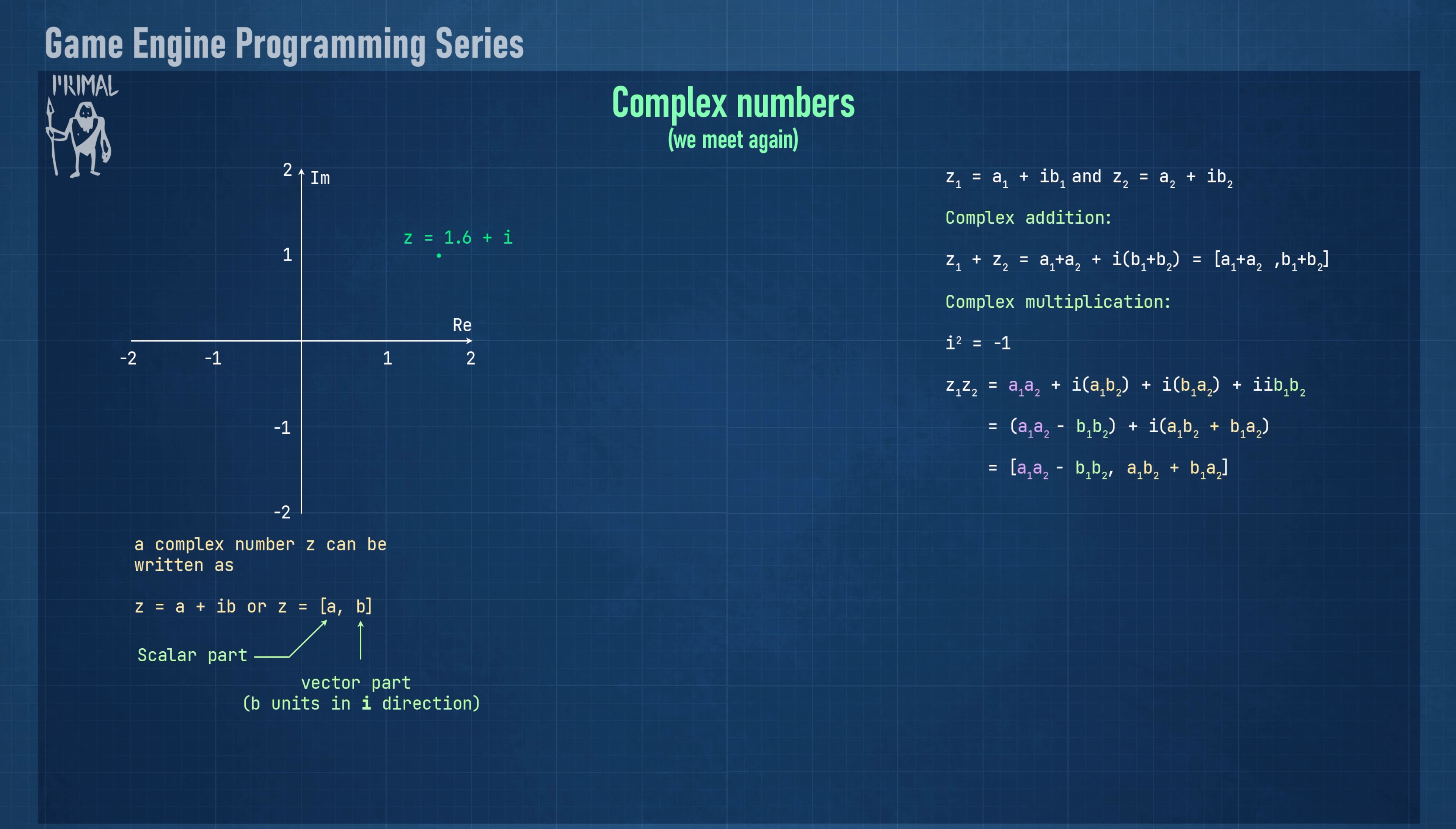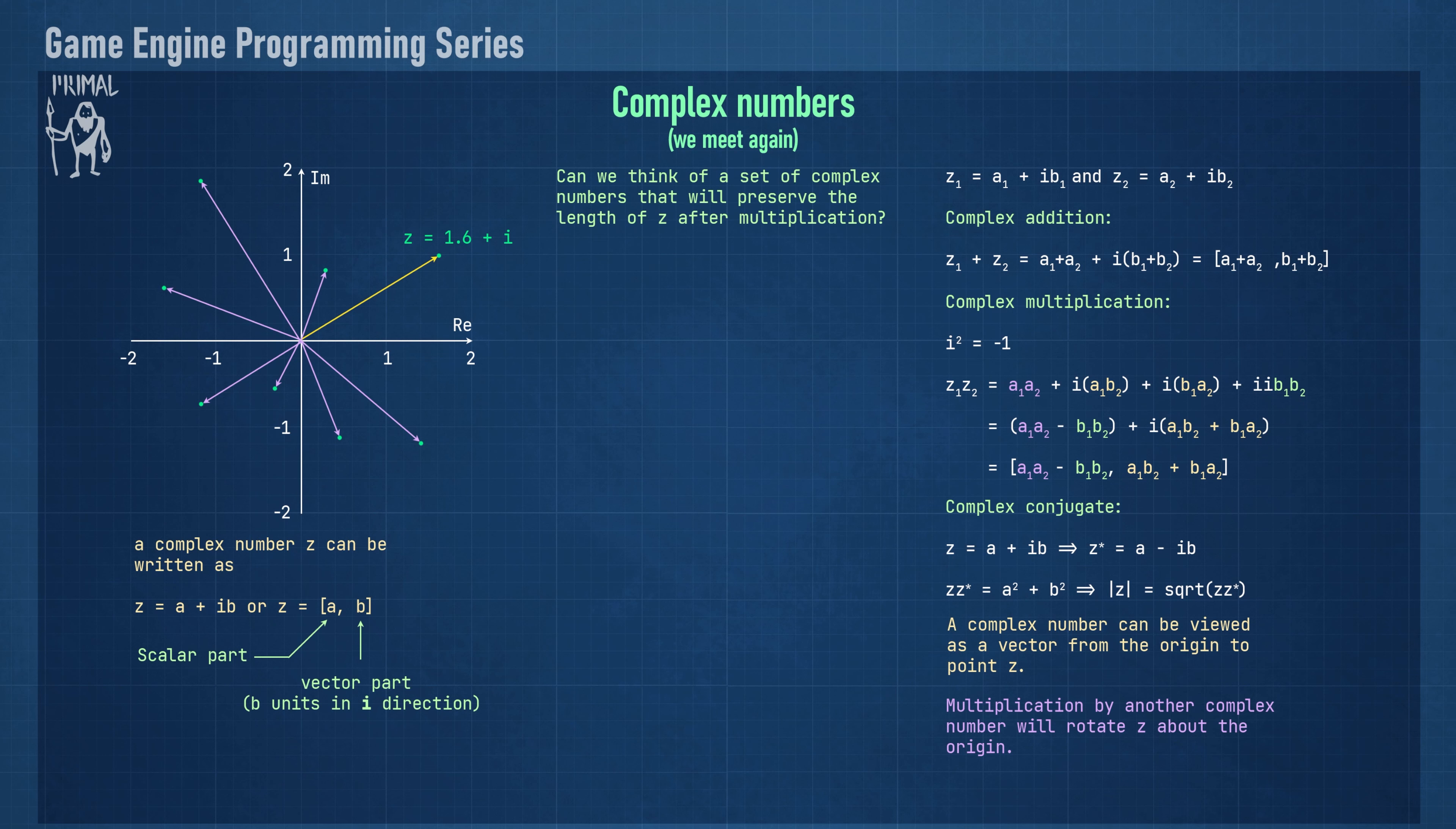We can add two complex numbers in the same way we add vectors. Multiplication is also the same, except i squared evaluates to minus one. Another property of complex numbers is the complex conjugate, which simply flips the sign of the imaginary part of the complex number. Multiplying a complex number with its conjugate equals the square distance of that number to the origin. We can use that to calculate the magnitude of the vector from the origin to the complex number. When we multiply a complex number by another complex number, we'll always get a number that's also on the complex plane. Although the length of the resulting vector can vary, it's easy to see that multiplying is the same as rotating the vector about the origin.